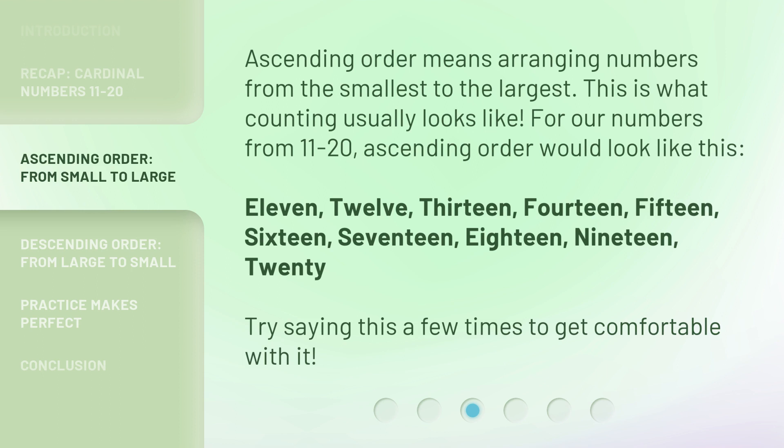Ascending order means arranging numbers from the smallest to the largest. This is what counting usually looks like. For our numbers from 11 to 20, ascending order would look like this: 11, 12, 13, 14, 15, 16, 17, 18, 19, 20. Try saying this a few times to get comfortable with it.